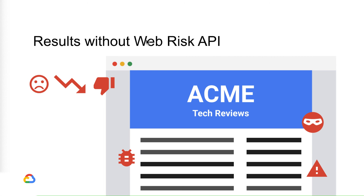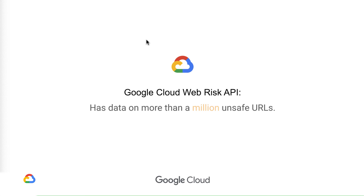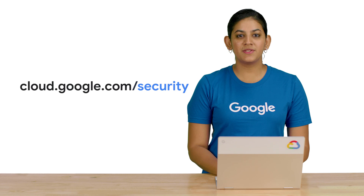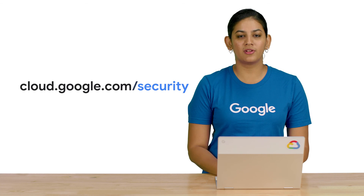Now that Acme Reviews has WebRisk installed, it can remove unsafe links from their platform, which means their site is safe again for users and their growth can continue. With data on more than a million unsafe URLs, WebRisk is here to help find unsafe content before your users do. Thank you for tuning in. Please visit cloud.google.com/security for more content from Google Cloud experts.